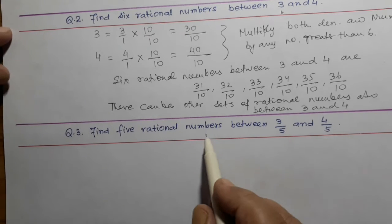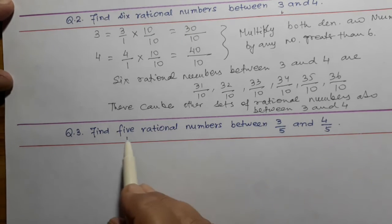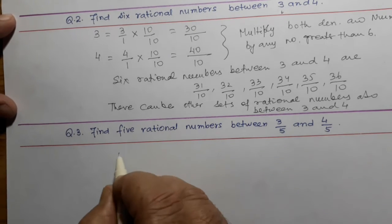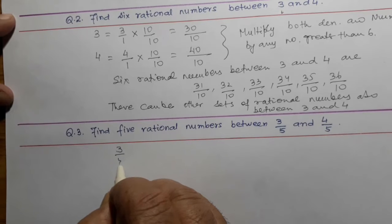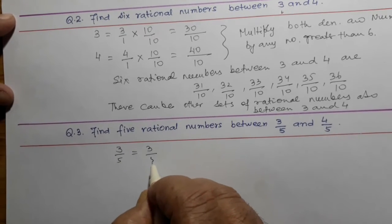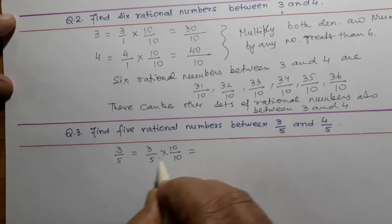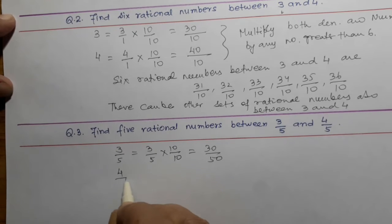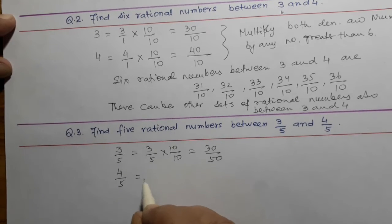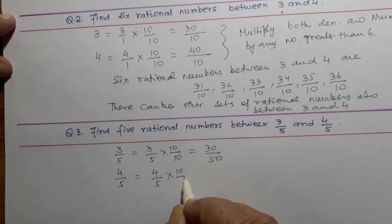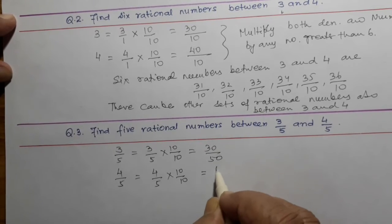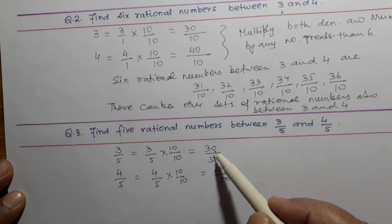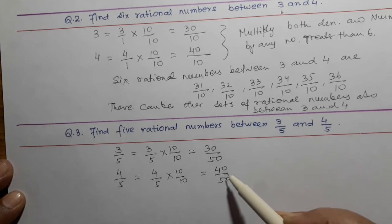Question 3: Find 5 rational numbers between 3 by 5 and 4 by 5. 3 by 5 can be written as 3 by 5 into 10 by 10, which comes to 30 by 50. Again, 4 by 5 equals 4 by 5 into 10 by 10, which comes to 40 by 50. So there are many rational numbers between 30 by 50 and 40 by 50.